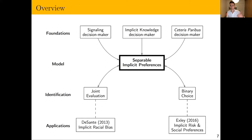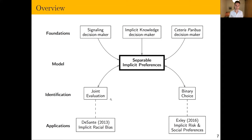For the rest of the talk I'll walk through this diagram. At the top are the foundations — I'll quickly give intuition for why three different types of model give rise to similar behavioral patterns. At the heart of the talk is the model we call separable implicit preferences, which defines implicit preferences and characterizes what they look like. Then I'll take you down one branch showing identification in joint evaluation data with an application to racial bias, and another branch using binary choice data with an application to implicit risk and social preferences.